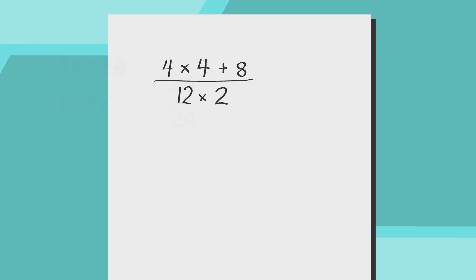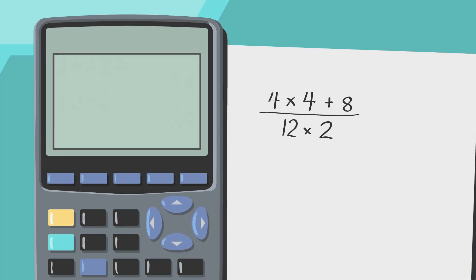One way to avoid really common errors is to put the numerator and denominator of your fractions into the calculator separately. In the case of our example, that would look like this. So, the top answer is 24.